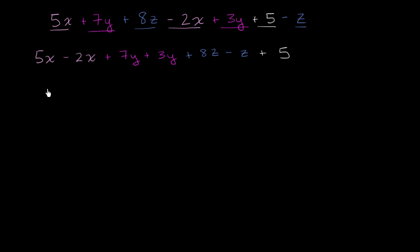There's not some fancy algebraic magic going on here. 5 of anything minus 2 of that same thing, you're going to be left with 3 of that thing. In this case, that thing are x's. So this is going to simplify to 3x.